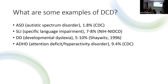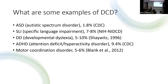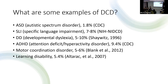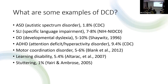ADHD involves attention problems with a prevalence of 9.5%. There is also motor coordination disorder, learning disability, and stuttering. If you sum up the numbers, the total prevalence is around 40% — a huge number — meaning 40% of the population has one or more DCD conditions. That's why it needs attention and that's why people in psychology should contribute to this area.